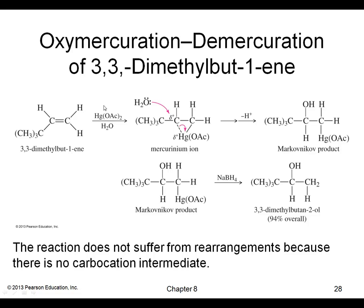Markovnikov's rule is enforced in this reaction. After the mercurinium ion has formed, the bond wants to break so as to give a more stable delta-plus on the more substituted side. So water attacks the more substituted carbon — that's what yields the Markovnikov alcohol. Note that the reaction does not suffer rearrangements because there is no full carbocation intermediate.